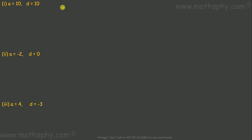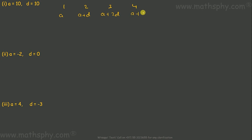So I will write it this way. First term, second term, third term, fourth term. First term can be A. Second term can be A plus D. Third term: A plus 2D. Fourth term: A plus 3D.